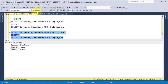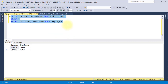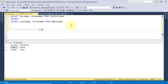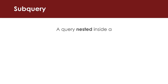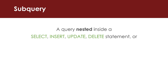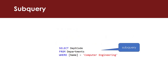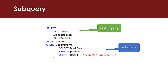Aside from SQL join statements and set operators, there is another important concept in SQL when creating queries involving multiple tables: the subquery. A subquery is a query nested inside a select, insert, update, or delete statement, or inside another subquery. A subquery can be used anywhere an expression is allowed. A subquery is also called an inner query or inner select, while the statement containing it is called an outer query or outer select.